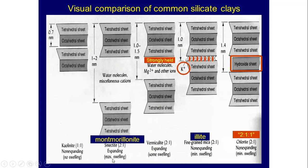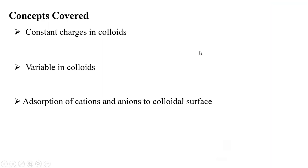Please remember these examples: smectite, vermiculite, fine-grained mica, and chlorite. Especially remember that potassium ions are directly bonded to the clay lattice — there is direct bonding between the tetrahedral sheet and the potassium ions.